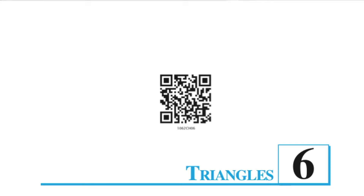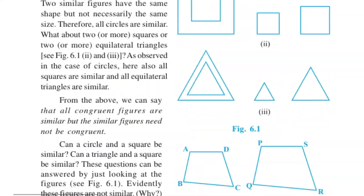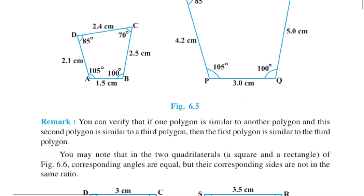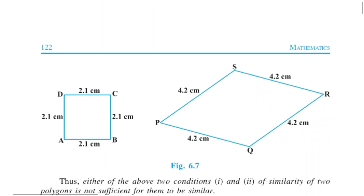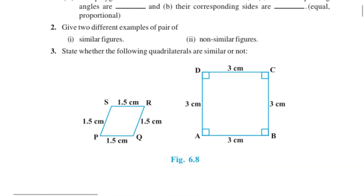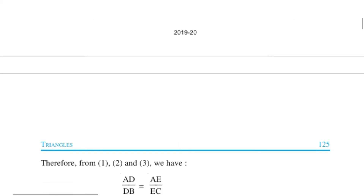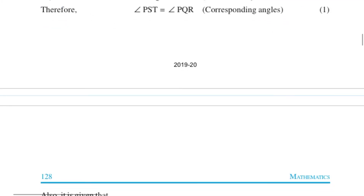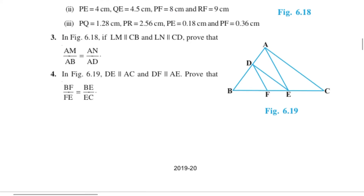E-Maths Class, Fatima Convent High School. I am Dipali. Chapter 6: Triangles, Class 10. After seeing the two criteria, namely AAA (angle-angle-angle) and side-side-side criteria, let us move to the third one. For that, let us perform an activity.